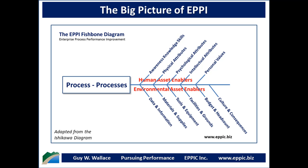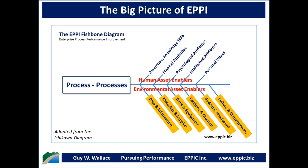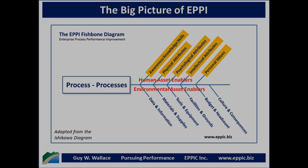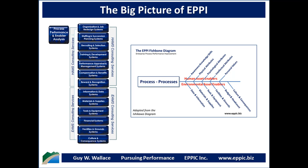We use the EPI fishbone diagram, adapted from the Ishikawa diagram, to assess the adequacy of the enablers that support the process. First, we start with the process — is it even designed? Is there a formal process being followed, or is it informal with great variability that might be attended to? Then we look at the environmental assets to determine whether they're adequate to the demands and requirements of the process. Thirdly, we look at the human assets that enable those processes given the environmental assets available. You must use that diagram to determine who is responsible for the provisioning of these asset enablers to the processes.